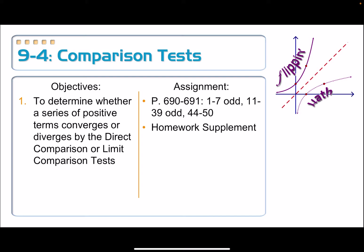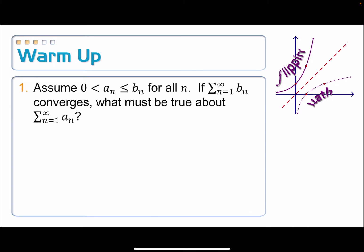Now let's add to our list. We've got two more tests: the direct comparison test and the limit comparison test, and they have their basis in this warm-up question. Assume 0 < a_n ≤ b_n for all n. In other words, the terms of a_n are always smaller than or equal to the terms of b_n. If the sum from n=1 to infinity of b_n converges, what must be true about the series of a_n terms? Basically, if you are smaller than a convergent series, you must also converge.